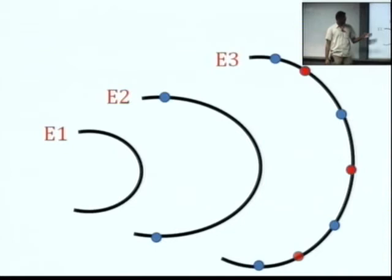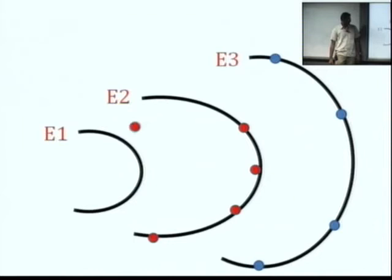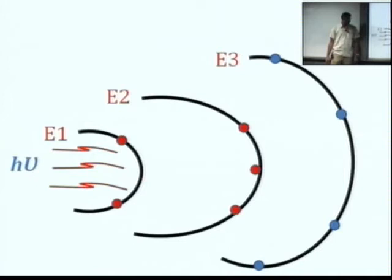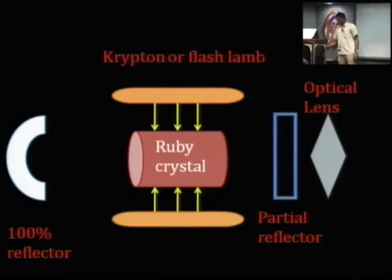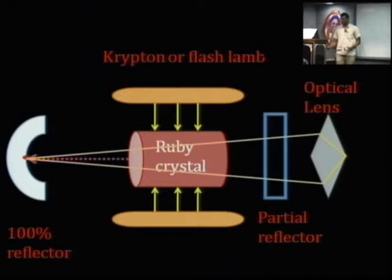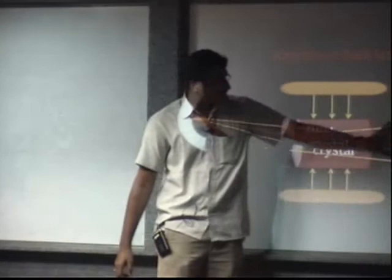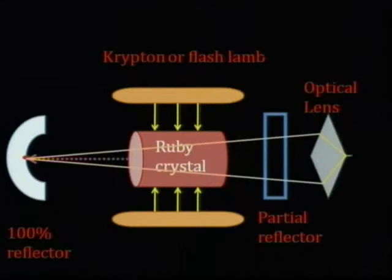Due to this excitation of electrons, they become unstable — the red atoms indicate the unstable electrons — and again move back to their original energy levels. When they do so, they emit light photons in terms of h-nu. These light photons travel through the medium and get reflected by the reflector, which is then amplified by the partial reflector. You can see this light gets reflected, increasing its width, and gets narrowed when it passes through the optical lens — that beam is your laser beam.